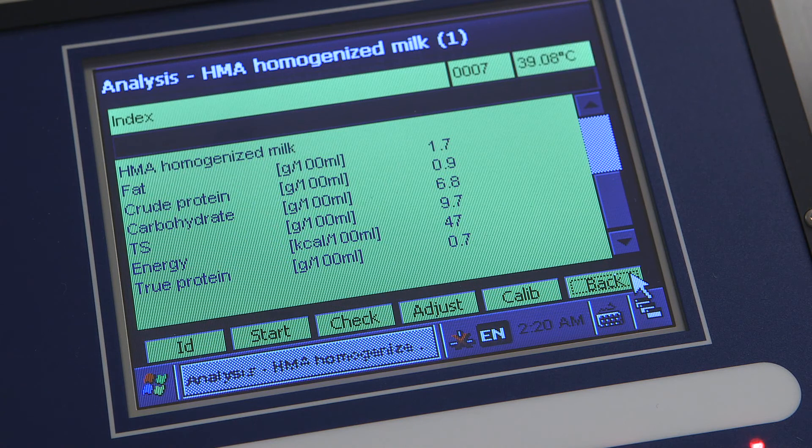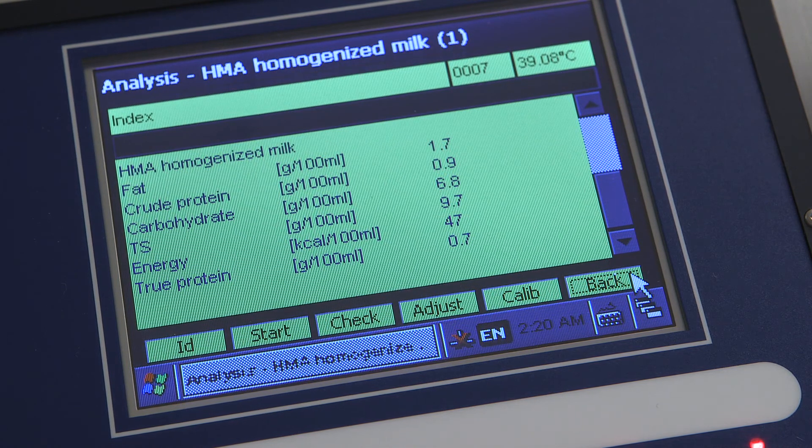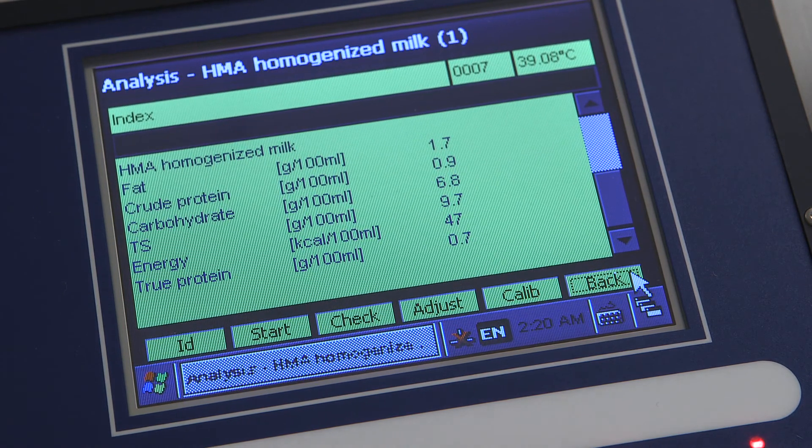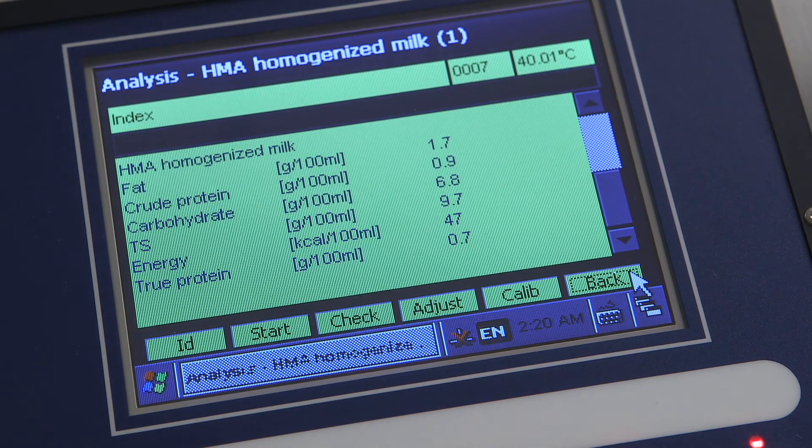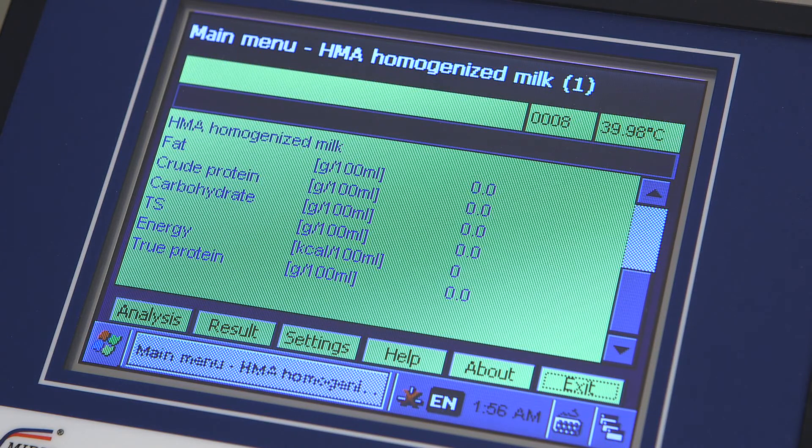The Mirris Hue & Milk Analyzer displays the results for each sample as they are analyzed. The optional printer gives hard copy of your results. The system has an internal memory that can save approximately 4000 measurements.